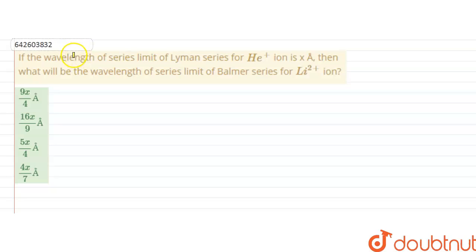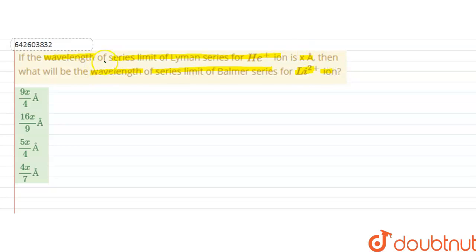Hello students, the question is: if the wavelength of the series limit of Lyman series for helium plus ion is X angstrom, then what will be the wavelength of the series limit of Balmer series for lithium 2 plus ion? It is given that the wavelength of the Lyman series for helium plus ion is X angstrom, and we have to find out the wavelength for the Balmer series of lithium 2 plus ion.